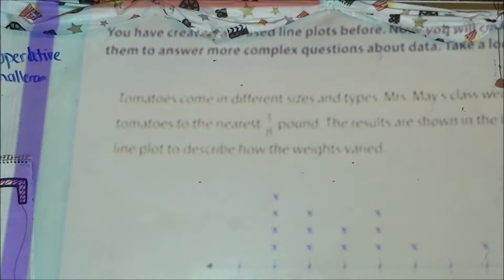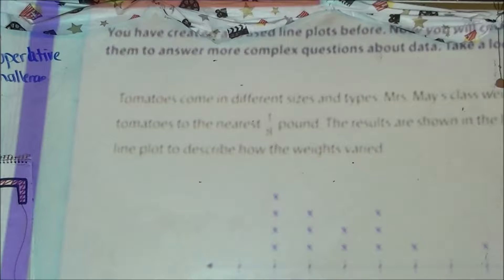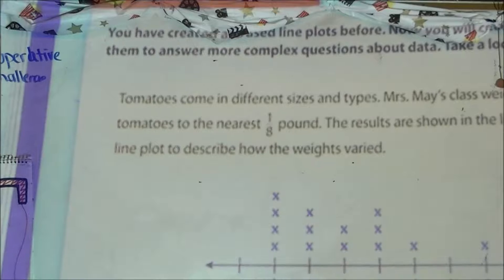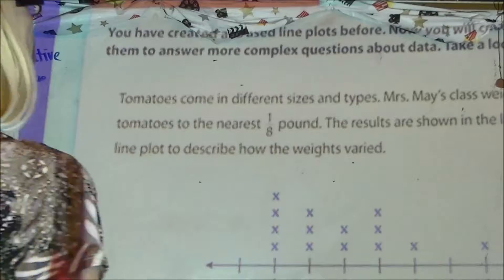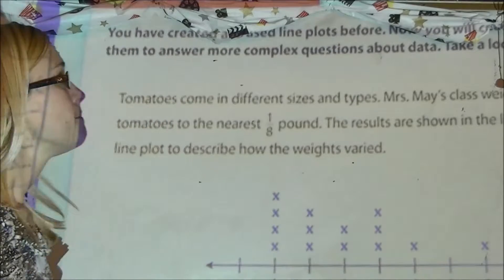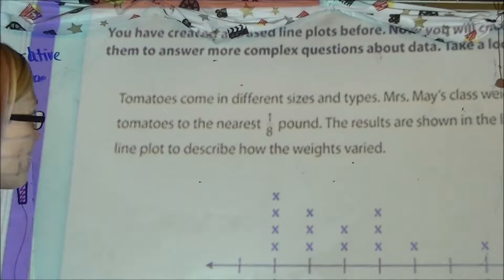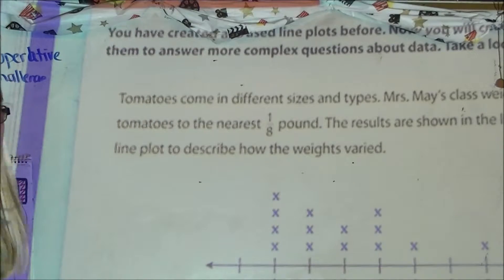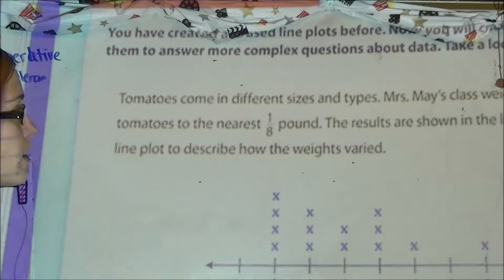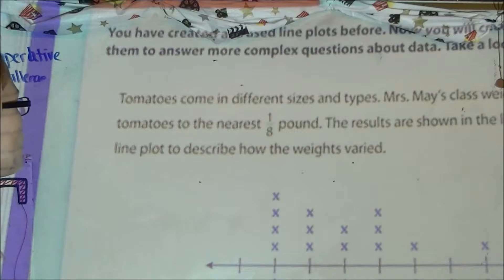We're looking at page 232 in your ready books. I recognize that you can't really read what you see on the screen, so you're going to need to follow along on your papers as well. The word prompt at the top says: Tomatoes have come in different sizes and types. Miss May's class weighed several different tomatoes to the nearest 1/8 of a pound. The results are shown on the line plot below.